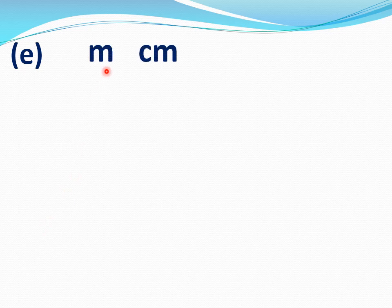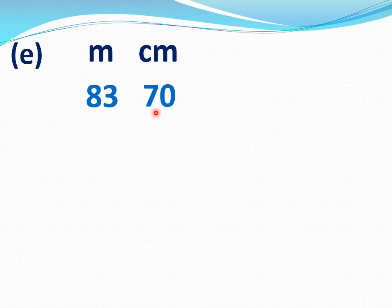E part. Write down meter, centimeter. Write first number: 83 meters 70 centimeters. Now write second number: 14 meters 90 centimeters.